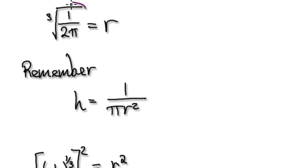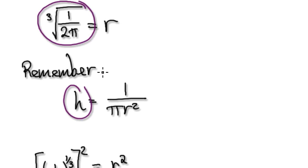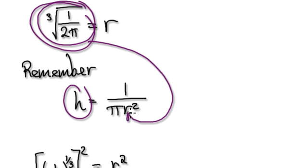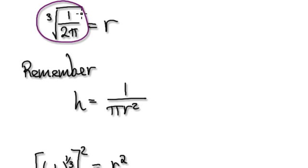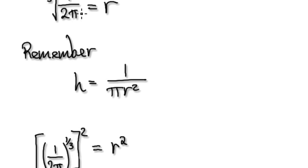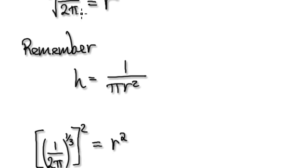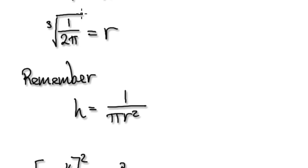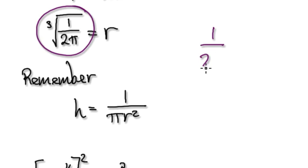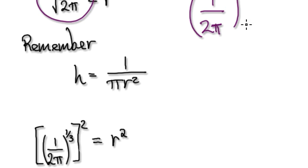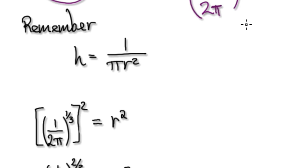This is our R, and we want to know H. So basically we just need to put this into here. At the moment it's quite ugly because of this thing. So let's tidy up. I'll rewrite this as 1/(2π)^(1/3), and then just use your knowledge of indices to tidy up.